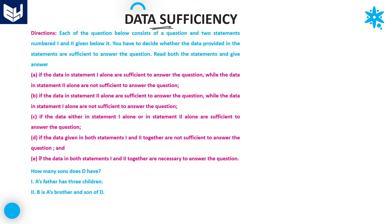The options are the same. The first option is statement 1 alone, the second option is statement 2 alone, the third one is either 1 or 2, the fourth one is both statements are not sufficient, and the fifth one is both statements together are sufficient to get the answer.